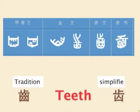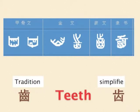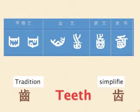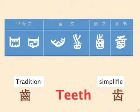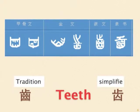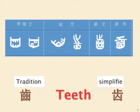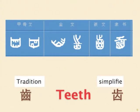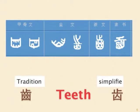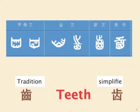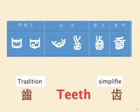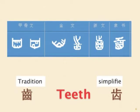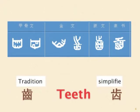Next word: tooth. The word originally represents a mouth with upper teeth and lower teeth. Later on, it was complicated by a mark that represents the molar, which formulated into the traditional form. The simplified form maintains the basic contour but decreases the inner four teeth to one.